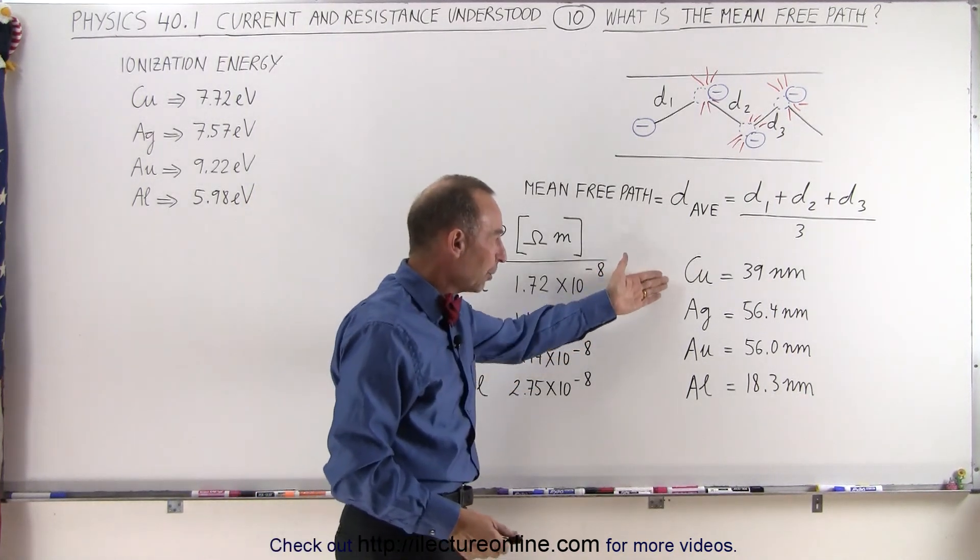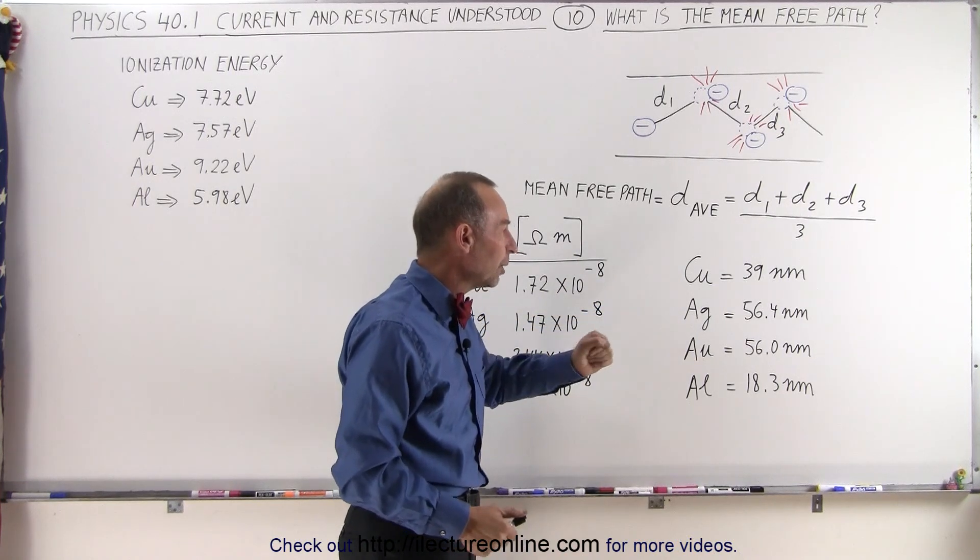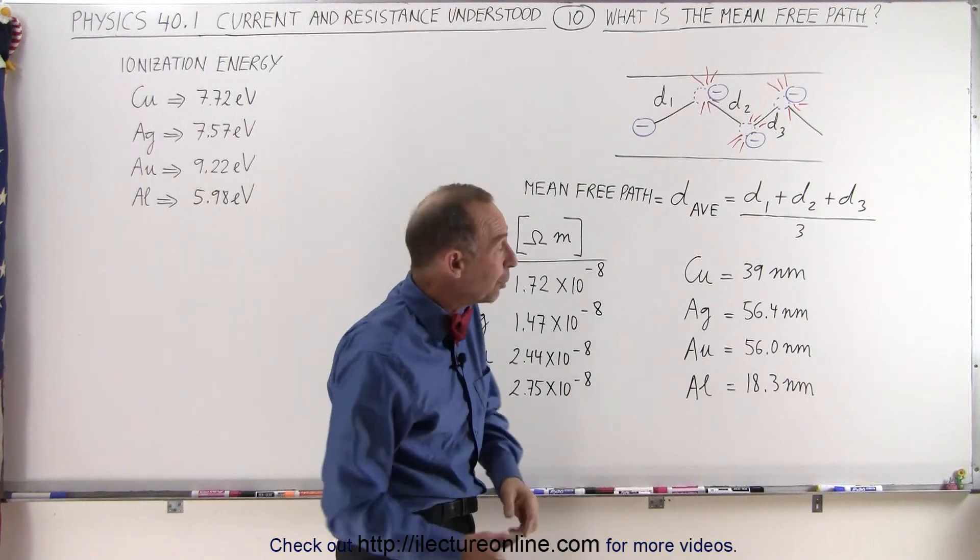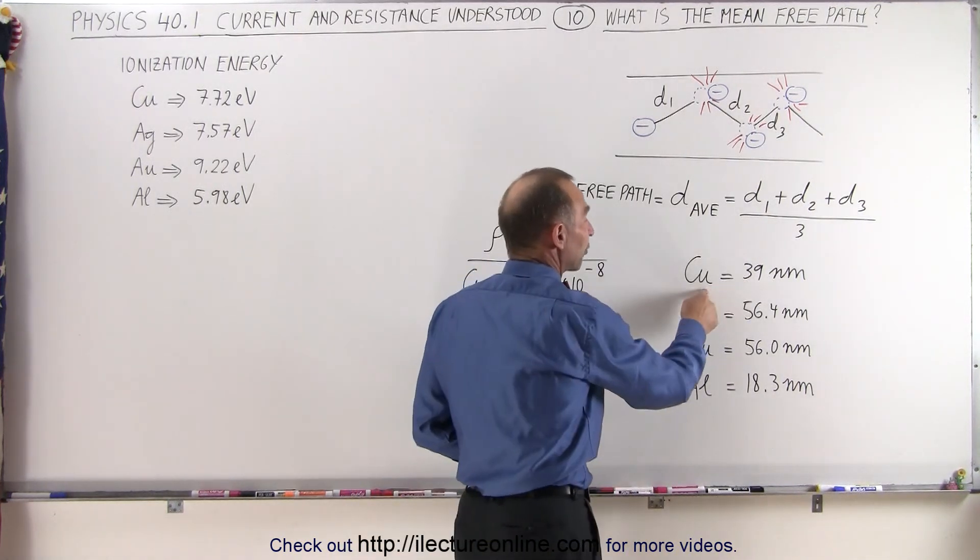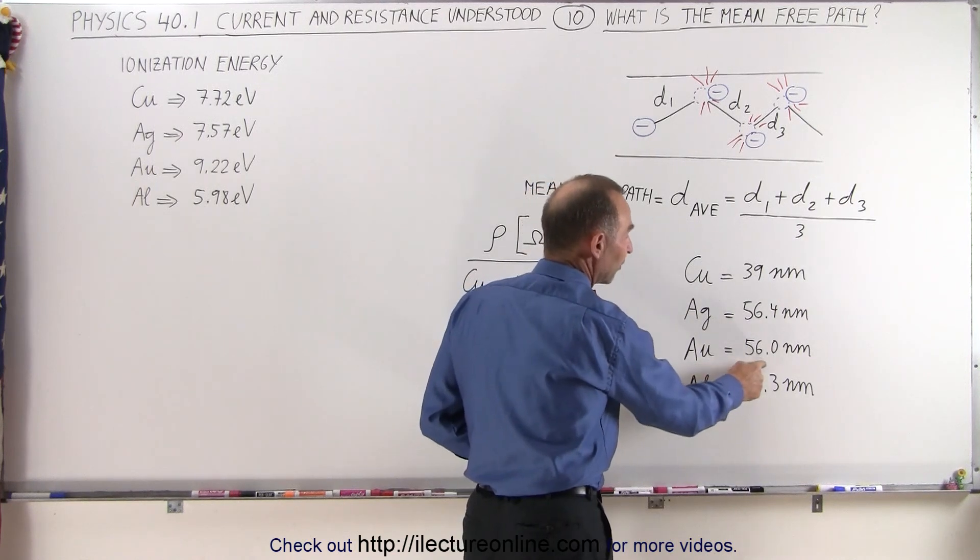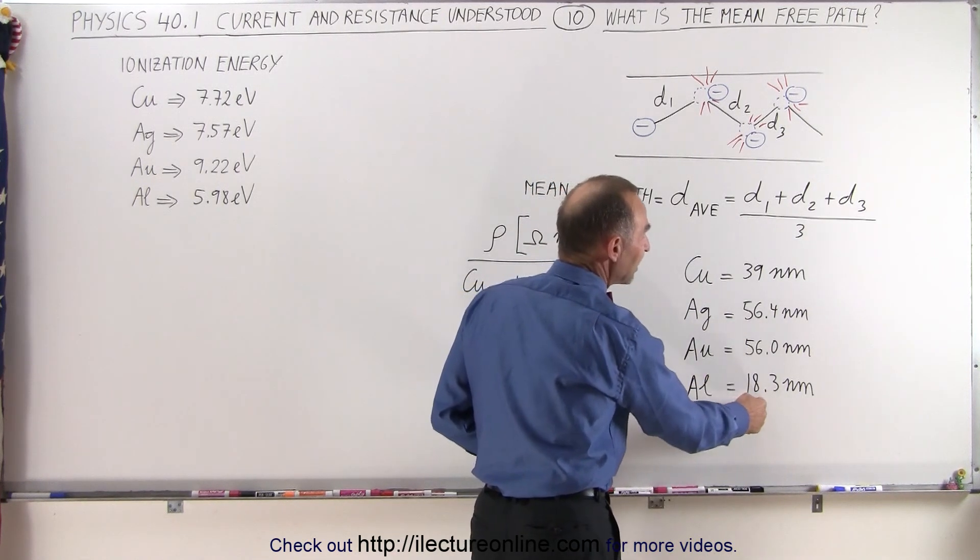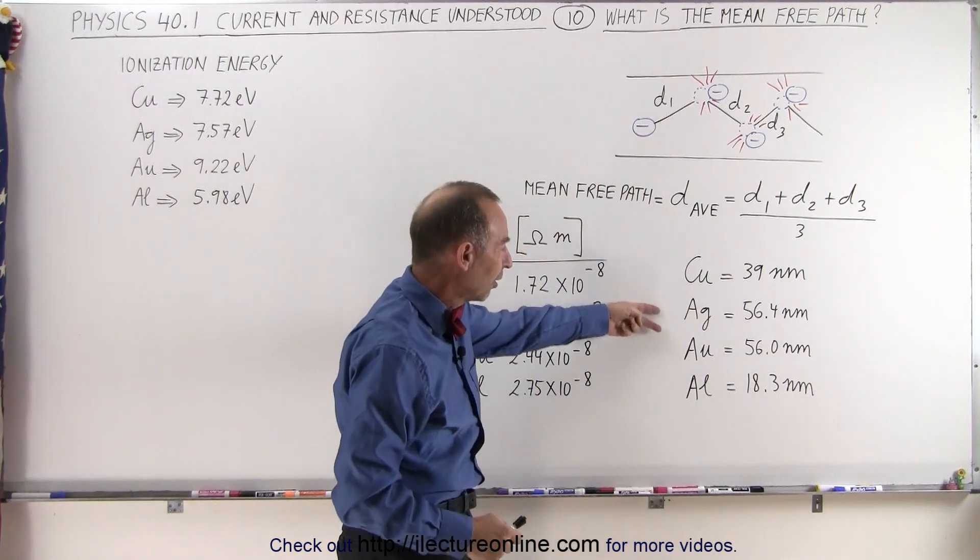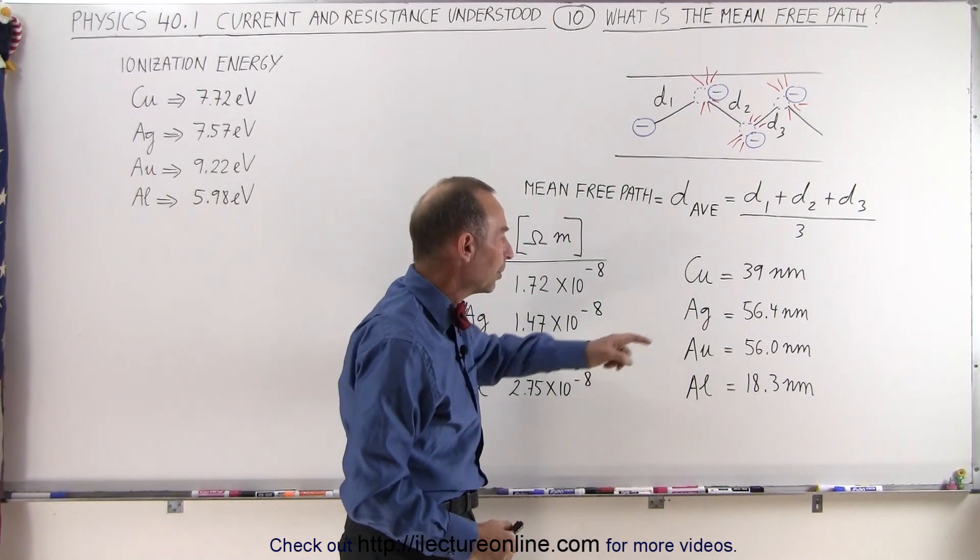Now, here, for copper, silver, gold, and aluminum, we have the average distance traveled, and it turns out it's in nanometers: 39 nanometers for copper, for silver it's 56.4, for gold it's 56.0, and for aluminum it's 18.3. I added another decimal point to see that there's a very slight difference between silver and copper.